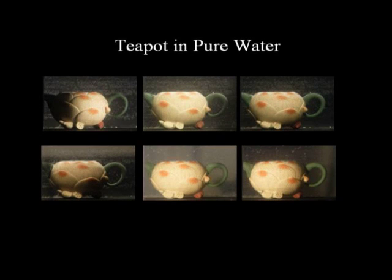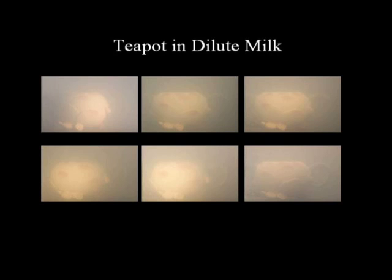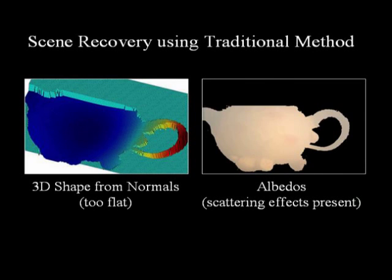The second technique we consider is the popular photometric stereo method. Traditional photometric stereo computes the surface normals and albedos of a Lambertian object using 3 light sources. We have shown that in the presence of scattering, at least 5 sources are needed to compute normals and albedos. Here we show images of a teapot seen through pure water under different lighting directions. Now we show the same teapot seen through dilute milk. Notice the strong effects of scattering leading to significant change in appearance. If we apply the traditional photometric stereo to these images, the 3D shape obtained is very flat and the scattering effects are absorbed by the computed albedos.